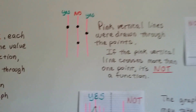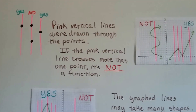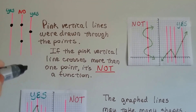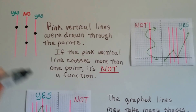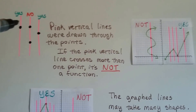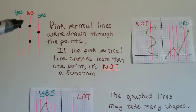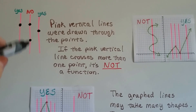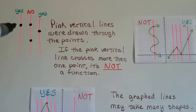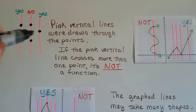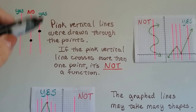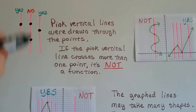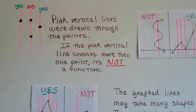We made pink vertical lines and drew them through these points. If the pink vertical line crosses more than one point — like here it crossed two — then it's not a function. Here it was only one, and here it was only one, so these outside ones were functions. This one crossed two, so it's not.